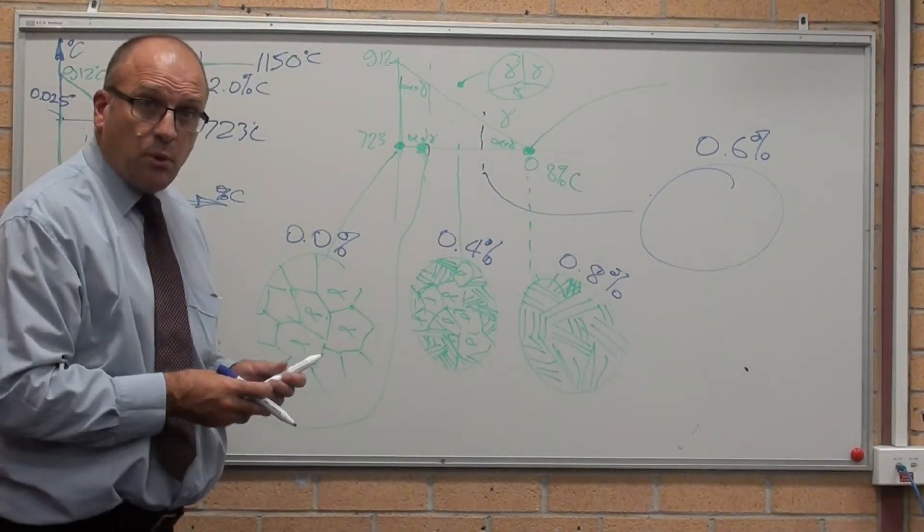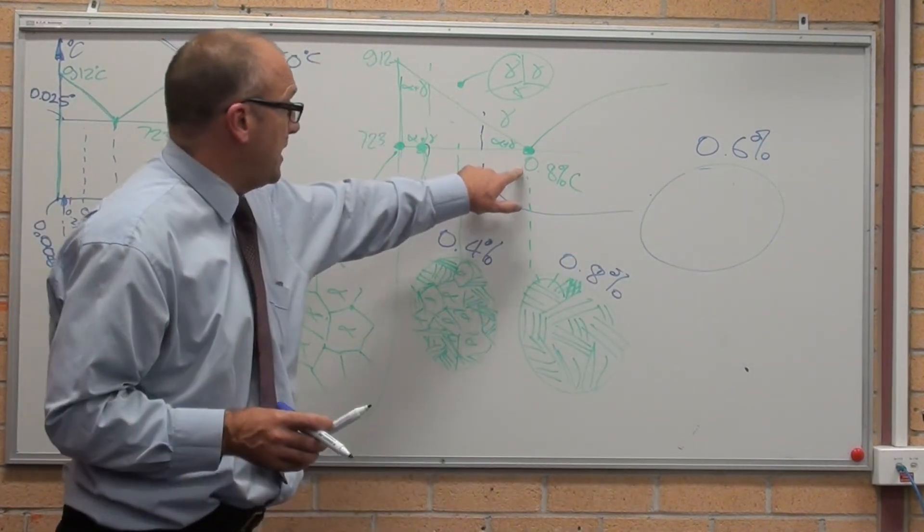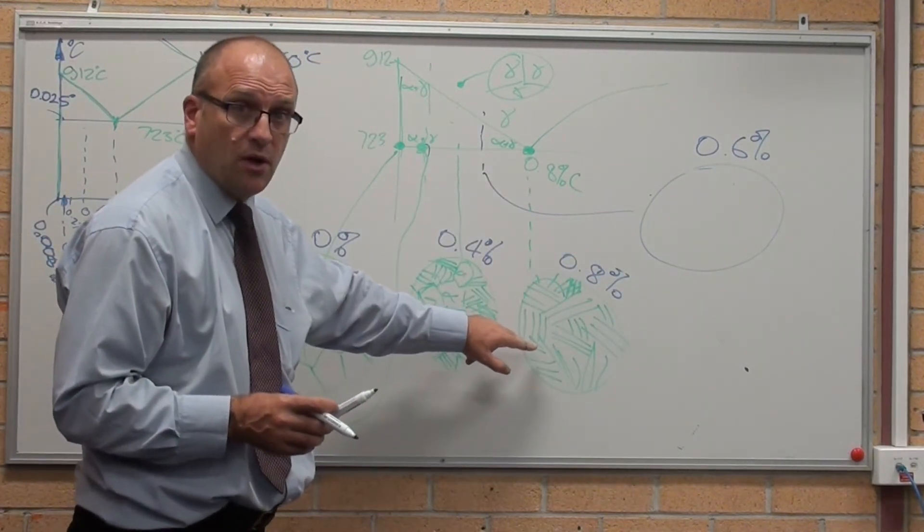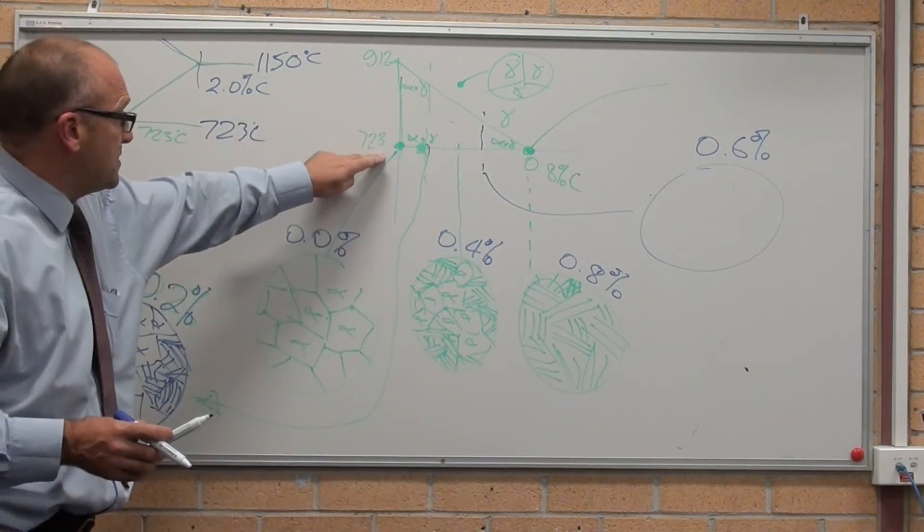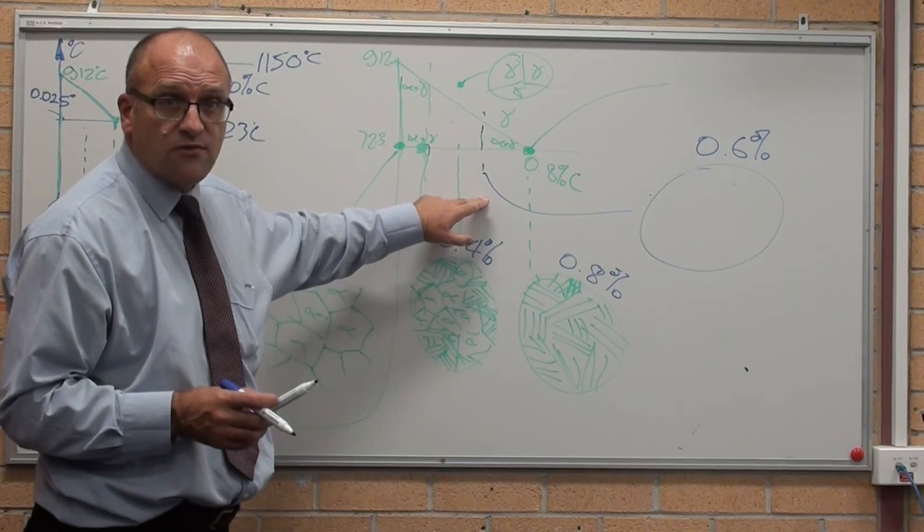So just looking at the microstructure of a 0.6% carbon steel. If you think about it, 0.8% carbon is fully pearlitic. 0% carbon, fully ferritic. This is three quarters pearlite.